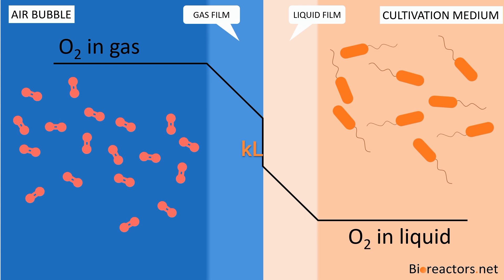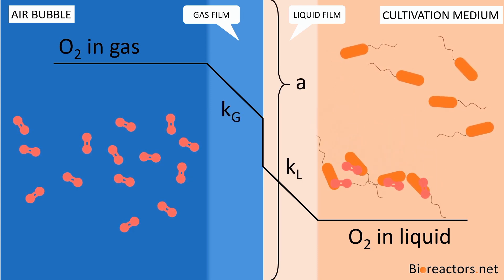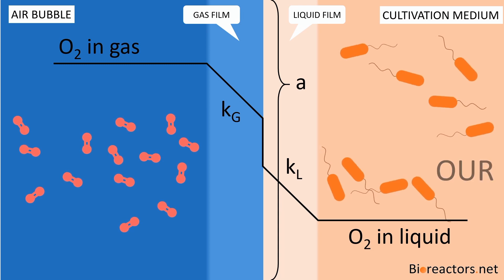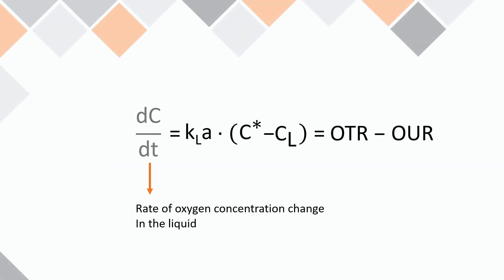The total rate of oxygen transfer from the gas phase to the liquid phase in biotechnology is often called oxygen transfer rate or OTR. Overall, OTR is dependent not only on the mass transfer coefficient, but also on the contact area between both phases. When introducing air as a means of aeration, the oxygen transfer rate depends on the mass transfer coefficient and the contact area between the air bubble and the fermentation medium.